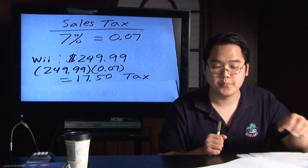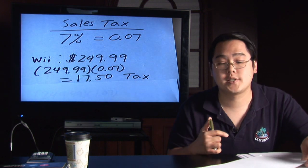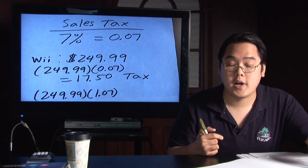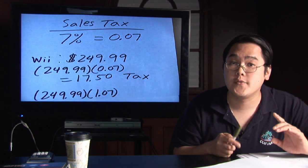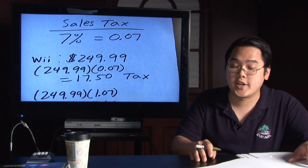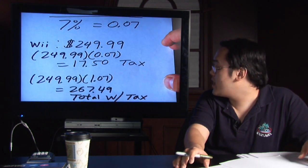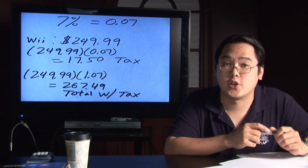Whenever you put a 1 in front of the decimal, it will always give you the total. So if you want to find out the total cost of the Wii including tax, you take $249.99 and multiply by 1.07. Notice that 1 - that's going to give you the total along with the tax. When you multiply, you're going to get a grand total of $267.49, and that's the grand total, tax included.